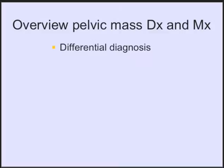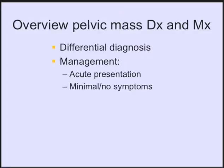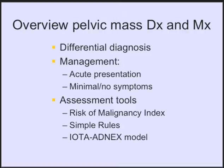The overview of my lecture today: first we will discuss the differential diagnosis, which is quite extensive. Then I'll present management options — an important discriminator is whether a woman presents with acute symptoms or has no symptoms, minimal symptoms, or sometimes even an incidental finding. Then we present three different assessment tools: the Risk of Malignancy Index (RMI), the Simple Rules based on ultrasound scan, and the so-called IOTA ADNEX model.